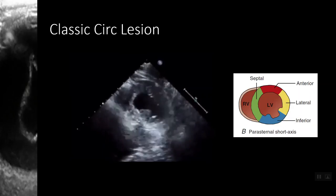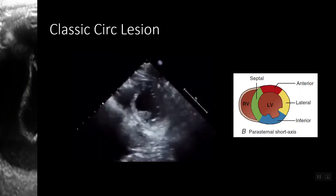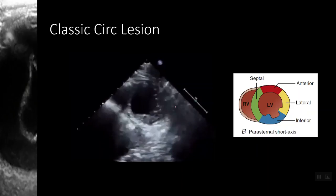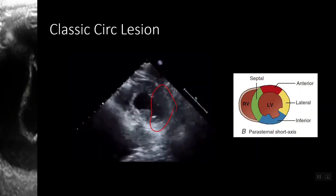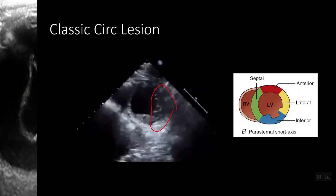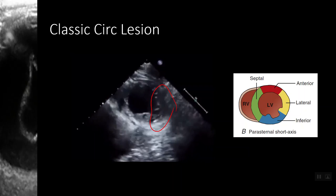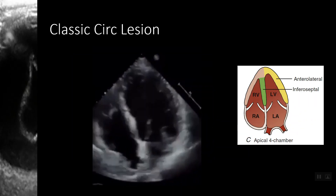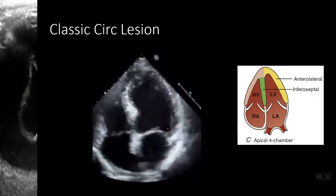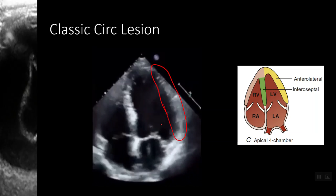On to our circumflex: the circumflex artery typically perfuses the lateral wall. In this parasternal short axis, we get decreased myocardial thickening in the lateral wall — we get the impression the lateral wall is not contracting but is rather just being pulled along for the ride. This decreased thickening and decreased movement can indicate ischemia in the territory of the circumflex artery. We can further see these changes to the lateral wall in an apical four chamber, where again we see reduced myocardial thickening in the lateral distribution.